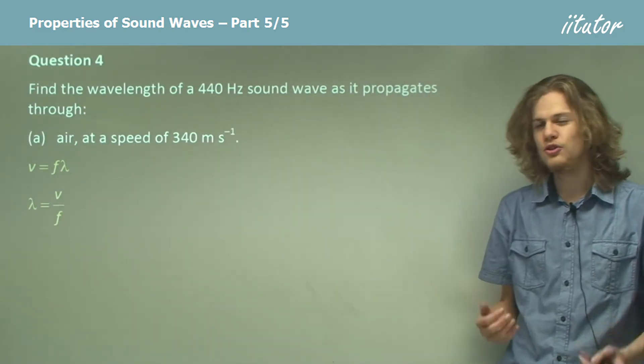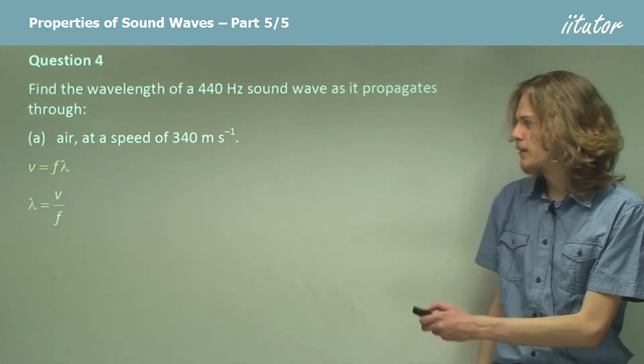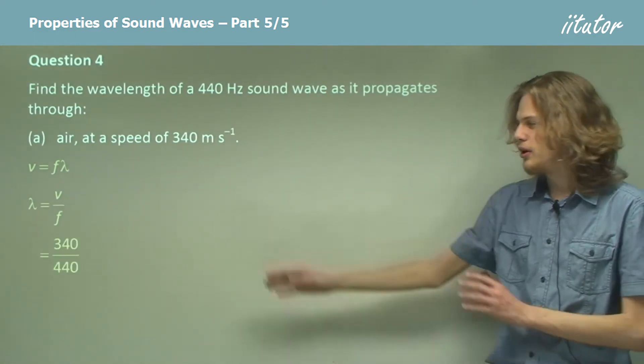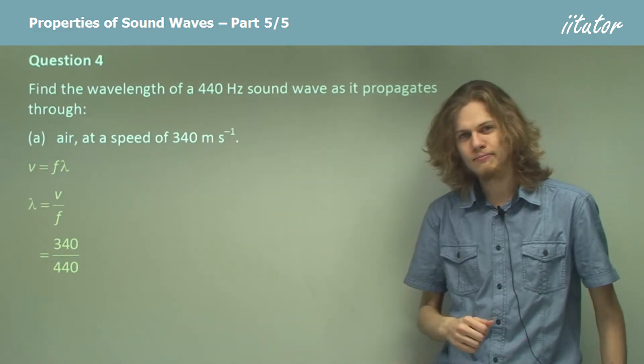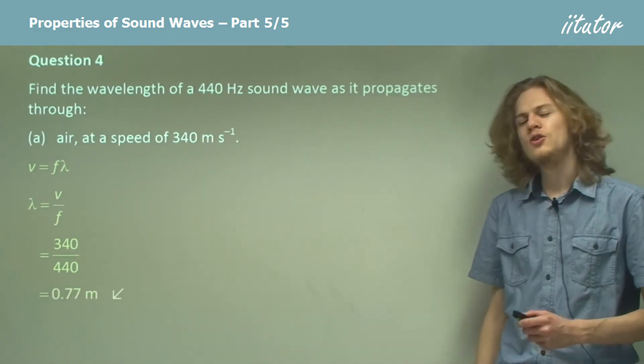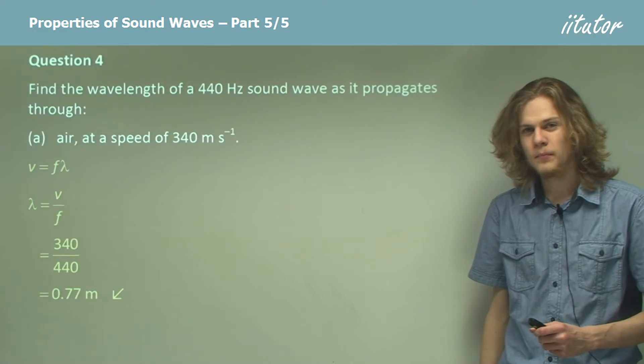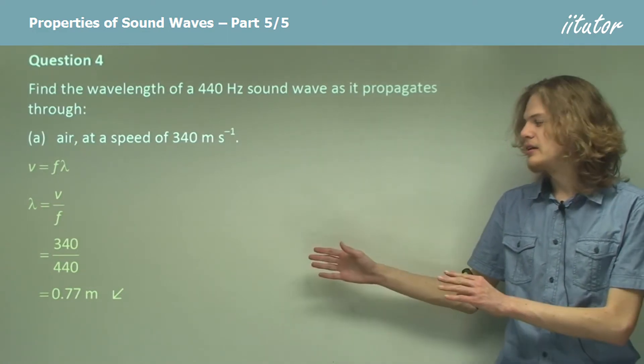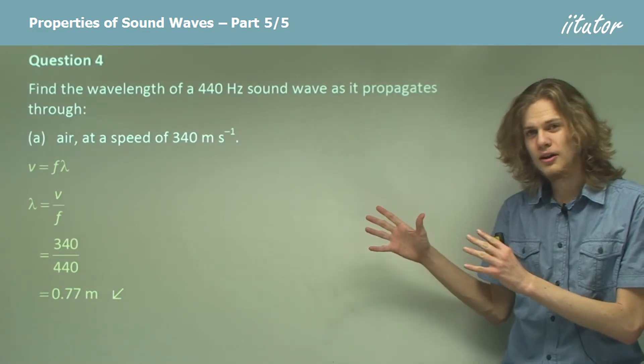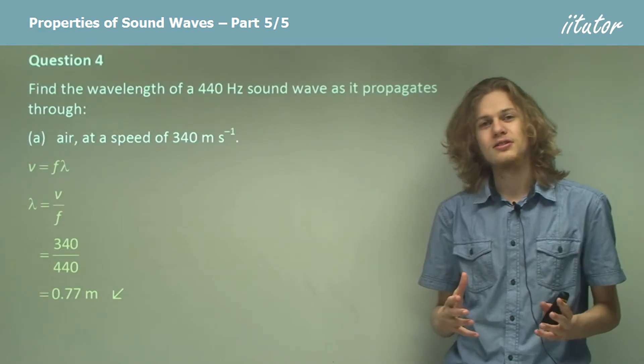Then all we need to do is substitute our values for V and F. That will give us an answer of 340 over 440 or 0.77 meters. So that means that the wavelength of the sound wave is 77 centimeters.